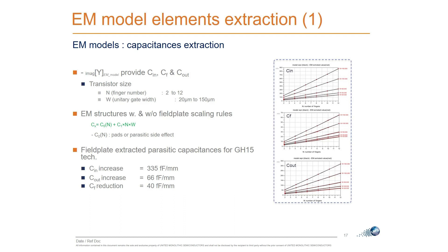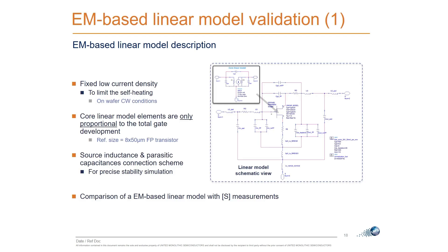From this validated model we can establish scaling rules directly linked to the transistor topology. For example, some parasitics are proportional to unitary gate width, while others are linked only to the manifold or access bus of the drain or gate. From these rules we can deduce all relationships needed to build a fully scalable model.